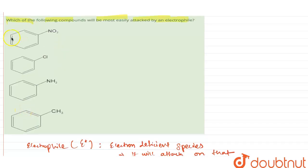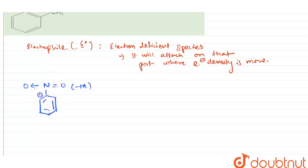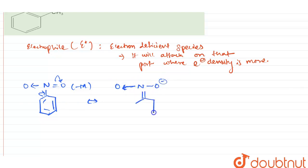The first option is nitrobenzene. The nitro group is an electron-withdrawing group, so it will have minus I effect and minus M effect. It will withdraw electrons from the benzene ring. After resonance, the ring becomes electron-deficient — a positive charge is created, making the benzene ring electron-deficient. Since the electrophile is already electron-deficient, it cannot attack here. Therefore, nitrobenzene would be the last in the order of electrophilic attack.